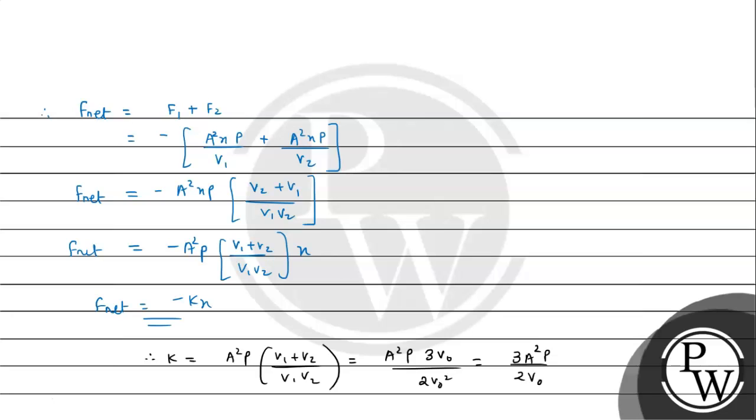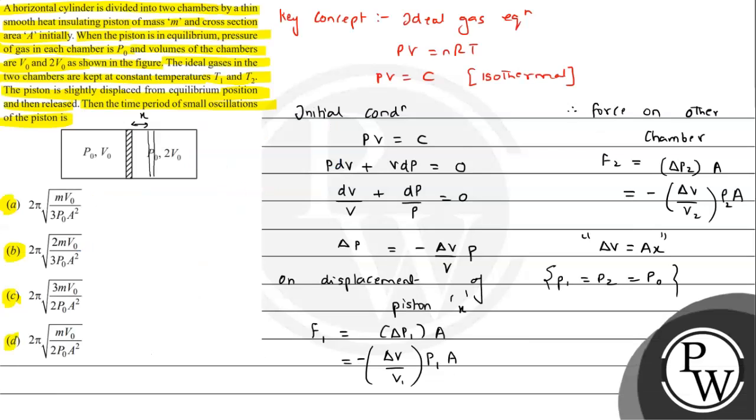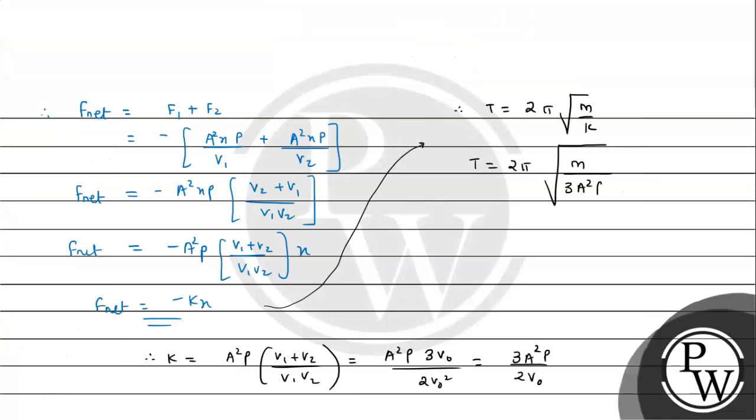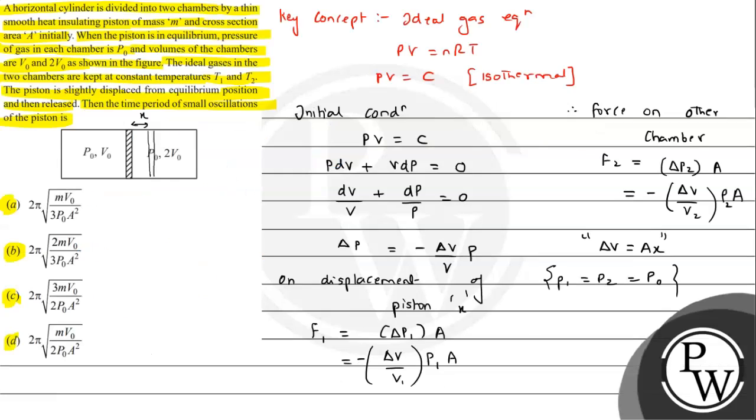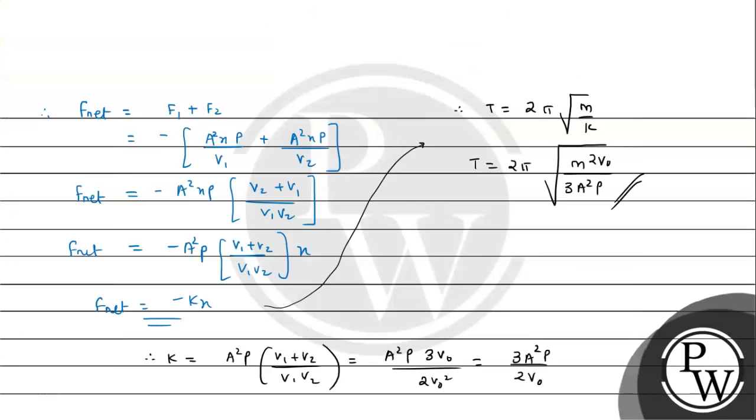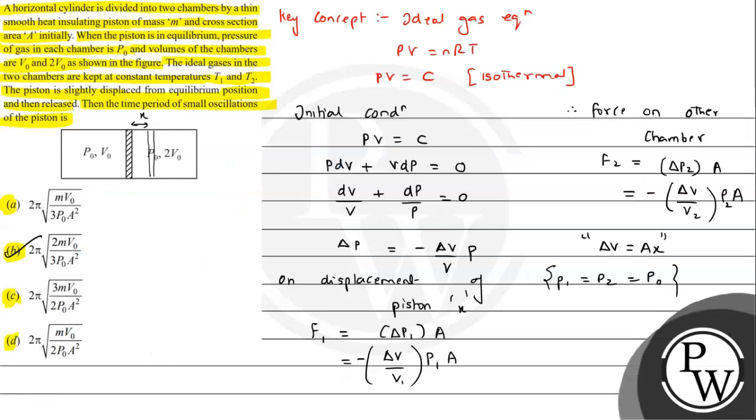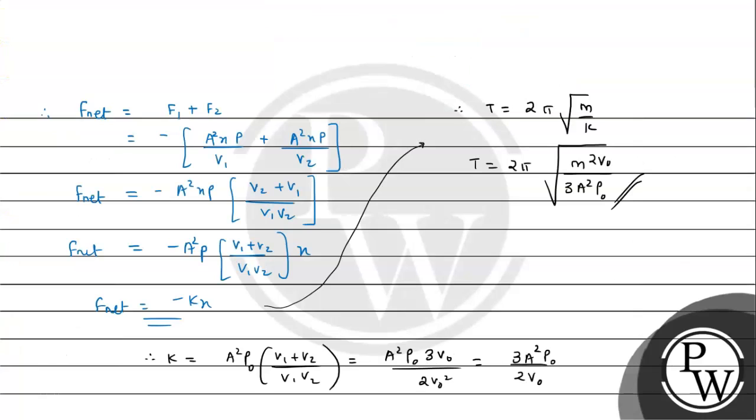So if any motion satisfies F = -Kx, what can we write? Time period expression can be written as 2π√(m/K). In this way time period expression can be given directly if this expression is satisfied. So here I am going to write 2π√(m upon K). It has been given as m only, that is piston mass m. K value is 3A²P/2V0, so this is the time period we are getting. So from the options we can say B will be the answer. And P0 basically, we will put P0 because initial pressure in both chambers is P0.